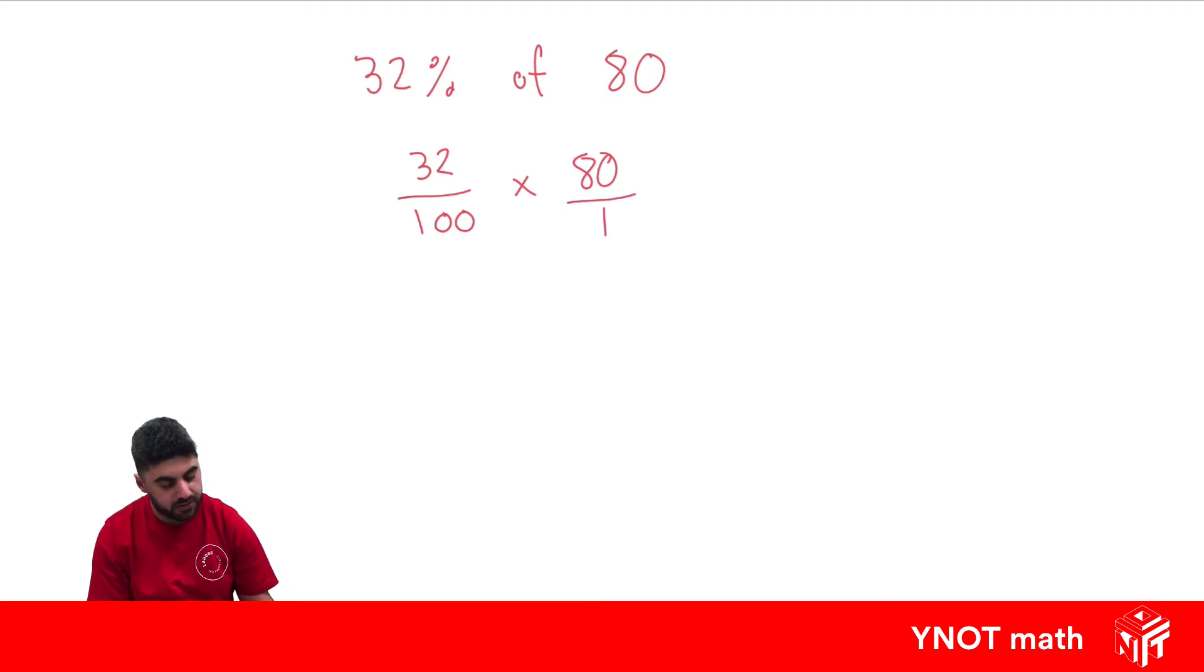Now a good little trick is to make sure that your denominator is 10 or 100 to make things easy. We can easily make it 10 by dividing by 10 diagonally. So here we're going to get 32 over 10 times 8 over 1.